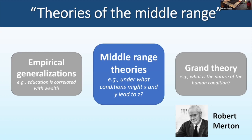He called this middle-range theories. The example I put here is: under what conditions might X and Y lead to Z? They tend to be predictive and testable. The idea is we're trying to figure out what actions might lead to some outcome in a specific place. These can be diagnostic—looking at something that happened in the past—or prognostic: if you want to make an influence somewhere, you might hypothesize something and then try it.